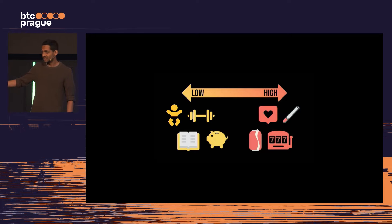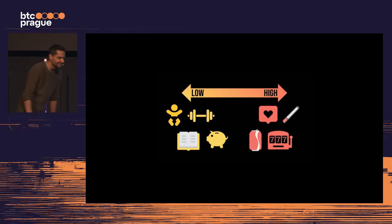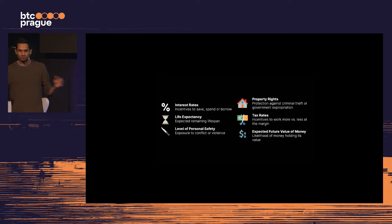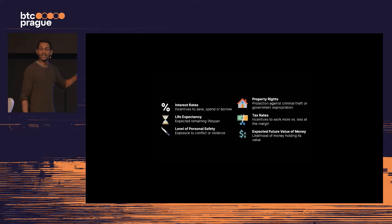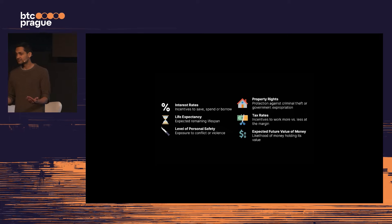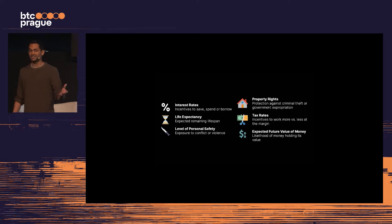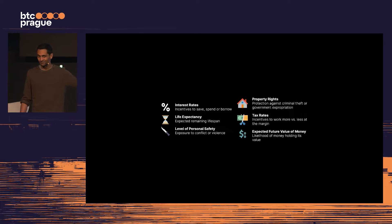Or you might have high time preference — living for the day, engaging in hedonism, all about that dopamine hit. That doesn't happen in isolation; you're a product of your environment. Many things affect your time preference. For example, life expectancy: if you live in a country where life expectancy is 60 versus 90, you'll make different decisions based on different time horizons. Or property rights — if you're not confident your government won't seize your property, are you likely to become a saver, invest, and acquire capital goods? Probably not.